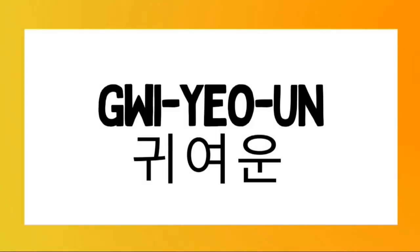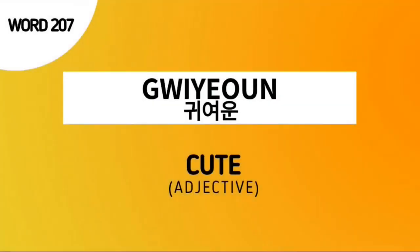Kyoun — this is pronounced as a three-syllable word. The first syllable is ki, the second syllable is yo, and the third syllable is un. Pronounce it with me: kyoun. The meaning of kyoun is 'cute' — this is an adjective. Again, kyoun means cute.